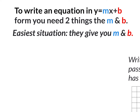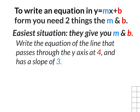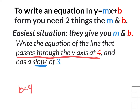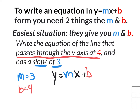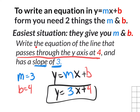For example, let's say they ask you: write the equation of a line that passes through the y-axis at 4 and has a slope of 3. They tell you it passes through the y-axis at 4 — that's telling you your b value is 4. And they tell you it has a slope of 3, so your m value equals 3. Now we know that if they give you the m and the b in y equals mx plus b form, you just plug it in and you're done. Your equation is y equals 3x plus 4.